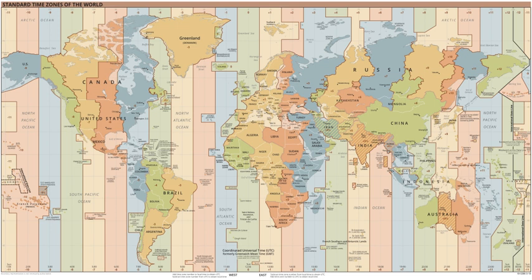Between 1972 and 1995, BST began and ended at 2 o'clock Greenwich Mean Time on the third Sunday in March and fourth Sunday in October. The following table lists recent past and near future start and end dates of British Summer Time.